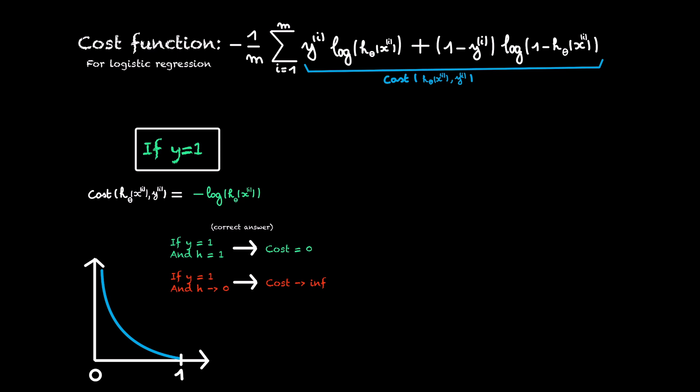So it's the same as a doctor telling a patient there is zero percent that his tumor is malignant. While in fact it is malignant. This is really bad, so we penalize this with an extreme value.